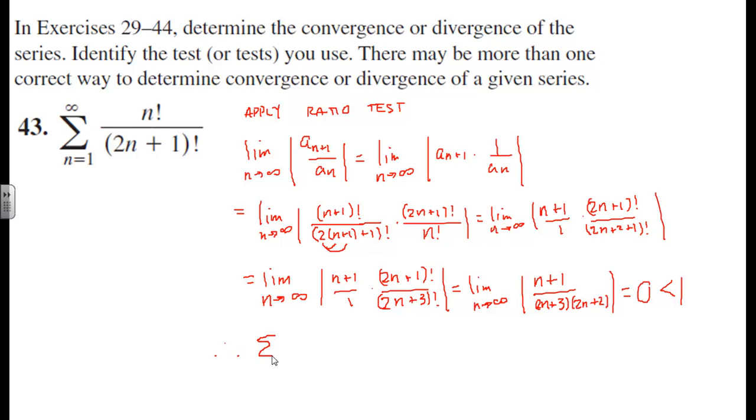Therefore, this series from n equal one to infinity of n factorial over two n plus one factorial converges by the nth, no not the nth term test, by the ratio test. What was I thinking? By the ratio test. There we have it.